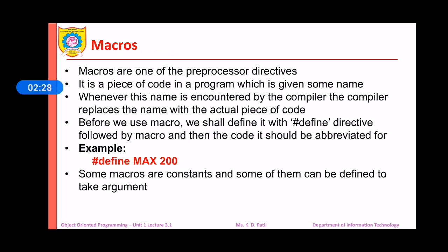Let us see what is macros. Macros are one of the preprocessor directives. It is a piece of code in our program which is given some name. Whenever this name is encountered by the compiler, the compiler replaces the name with the actual piece of code. Before we use the macro, we shall define it with hash define directive followed by the macro name and then the code it should be abbreviated for.